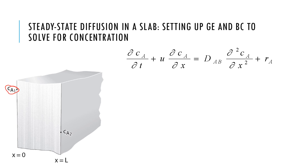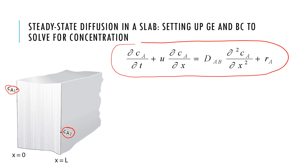We want to solve for the concentration profile and mass flux in a slab that has high concentration on one side and low concentration on the other side. We will always start from the general governing equation. We have three coordinate systems to choose from: Cartesian, cylindrical, or spherical. The equation shown is for Cartesian, which is obviously the case here.